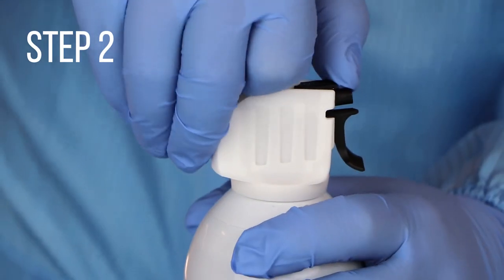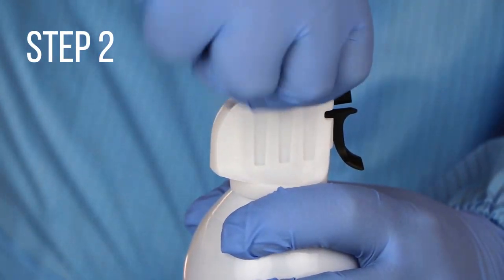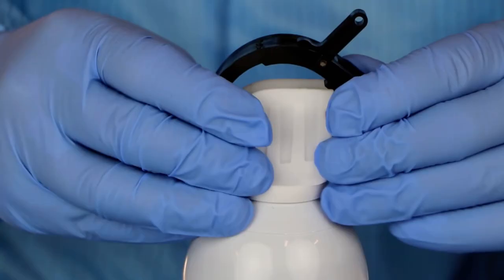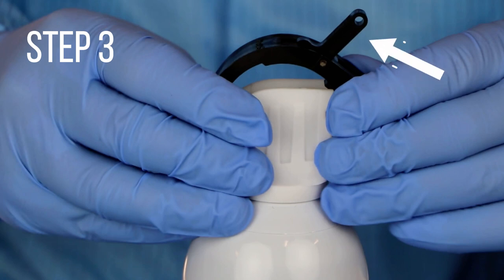Step 2: Remove the tab from the top of the aerosol can. Step 3: Ensure the Trigger Grip adapter toggle switch is in the OFF position.